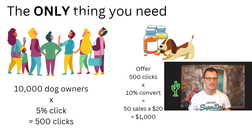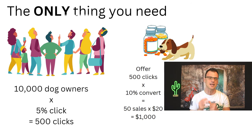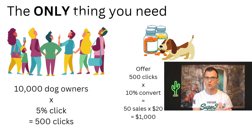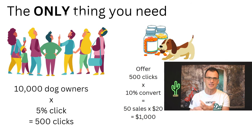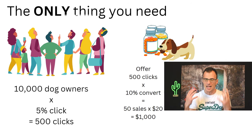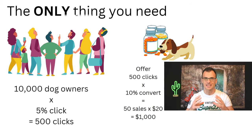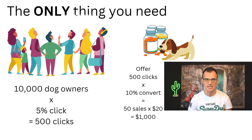This works exactly the same in any niche. As long as you can generate a targeted audience — whether it's health, fitness, dog owners, aquariums, cactus growing, gardening, whatever it is — as long as you've got the skills to generate that targeted audience, you will make money and be successful in affiliate marketing.